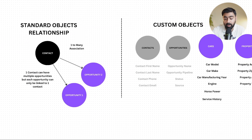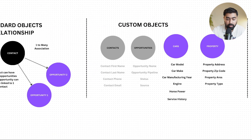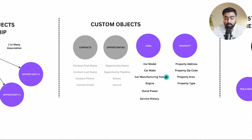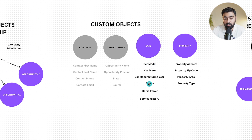This is where custom objects come in. We had contacts and opportunities as standard objects, but now we can create any kind of object — like cars, property, or a restaurant. That gives us an option to create extended custom fields. A car can be an object just like an opportunity, with multiple custom fields attached to it, and we can then create more associations with our contacts.